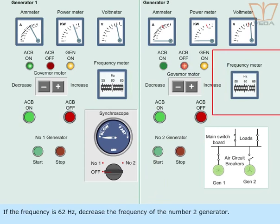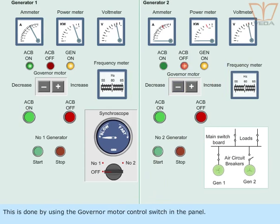If the frequency is 62 Hz, decrease the frequency of the number 2 generator. This is done by using the governor motor control switch in the panel. This decreases or increases the speed and hence the frequency of the generator 2.